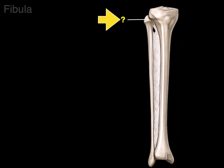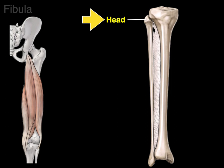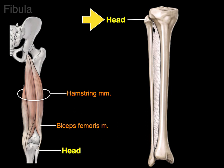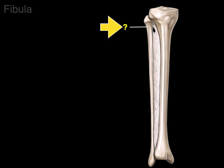The proximal part of the fibula is rounded — it is the head of the fibula. The head of the fibula serves as an attachment for some muscles, including the biceps femoris, which is the lateral hamstring muscle. It also serves as an attachment for the fibular collateral, or lateral collateral, ligament of the knee.